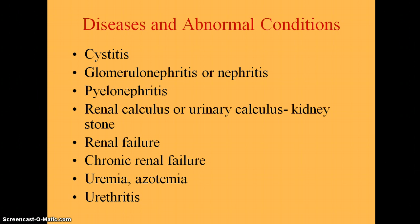Uremia, also called azotemia, is a toxic condition where the kidneys fail and urinary waste products start collecting in the bloodstream because they aren't filtered out. It can result from any condition affecting the kidneys — renal failure, nephritis, or anything similar. Symptoms include headache, dizziness, nausea, vomiting, ammonia odor to the breath, oliguria or anuria (low or no urine output), mental confusion, convulsions, coma, and eventually death.